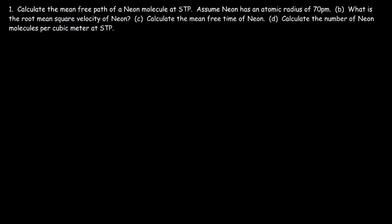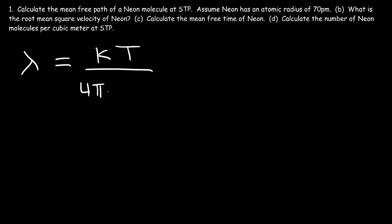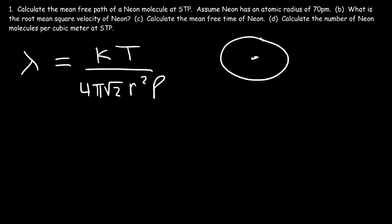What is the formula that can help us get it? The mean free path is equal to Boltzmann's constant multiplied by the temperature, divided by 4 pi times the square root of 2, times r squared, times p. Here p is the pressure and r is the radius of the atom.